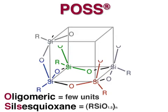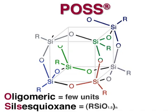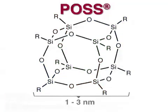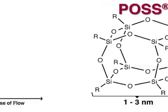Therefore, each silicon is bonded to three oxygen atoms and one organic group that may be inert or reactive. This combination of organic and inorganic components in one molecule gives POSS unique hybrid properties unlike conventional inorganic fillers and organic modifiers.